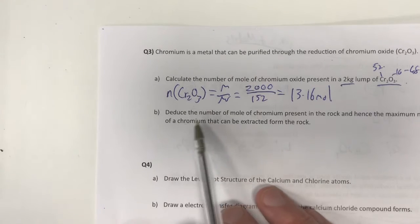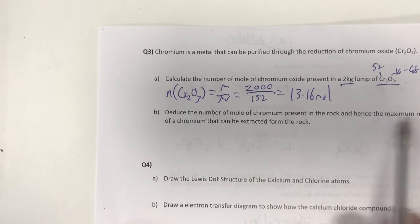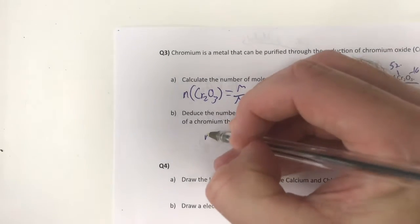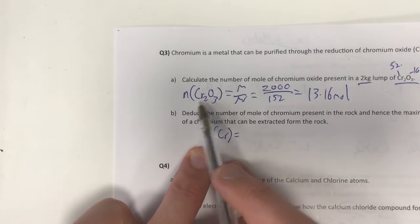Next question, deduce the number of moles of chromium present in the rock and hence the maximum mass of chromium that can be extracted from the rock. Alright, so I need to know my number of moles of chromium, and I can see that I've got two chromiums in every chromium oxide.